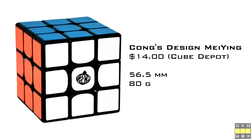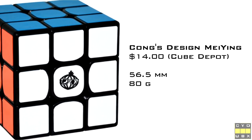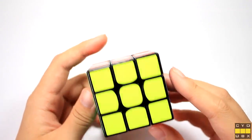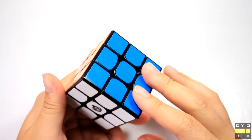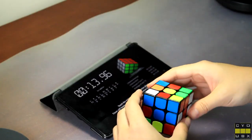The Kong's Design Mei Ying is $14 at Cube Depot, it stands 56mm tall and is beautifully stickered. The shades are the same as Moyu Cubes, but they are fitted so much better. Everything is centered perfectly, and the stickers cover a large portion of the surface, which is what I prefer.